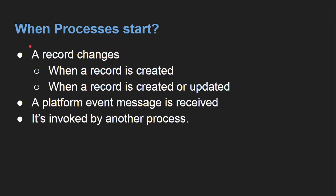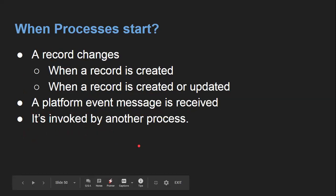When processes start: there are three triggers. First, a record changes — either when a record is created, or when a record is created or updated. Second, a platform event message is received. Third, it is invoked by another process. If any one of these conditions matches, your process will start.